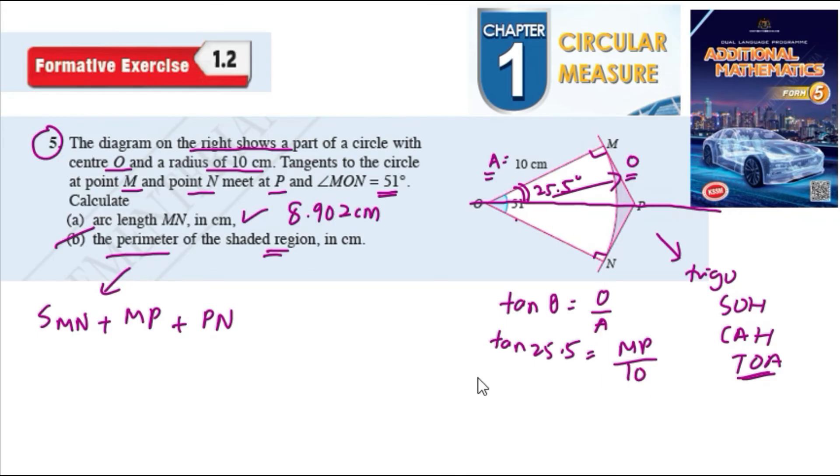So arc MN equals 8.902 plus MP, so MP is 4.770. We know that PN, so here PN equals MP. So here PN equals MP, so we just multiply with 2. So here we get...